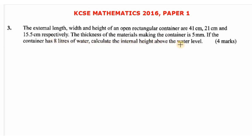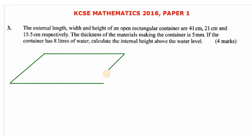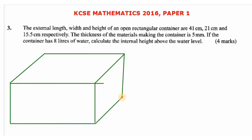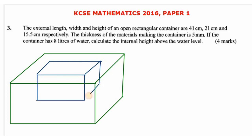Before we answer this question, let's first interpret it with diagrams. We are told that the thickness of the material used in making the container is 5 millimeters, so we have 5 millimeters from this end to this end, and also 5 millimeters on the other side. From the bottom surface of the external part to the bottom surface of the internal part is also 5 millimeters.